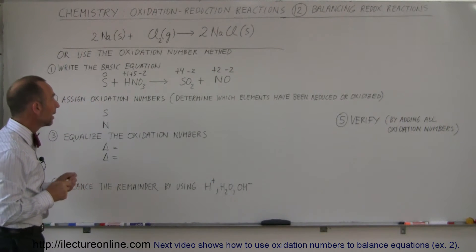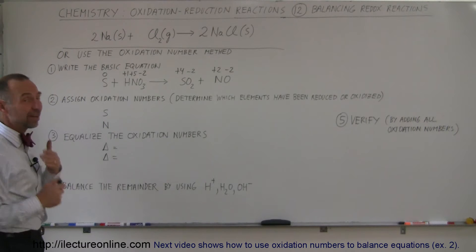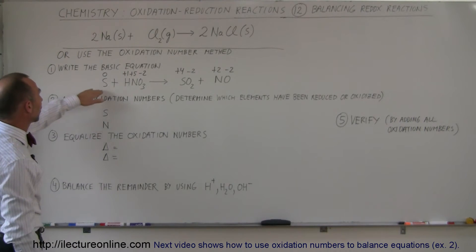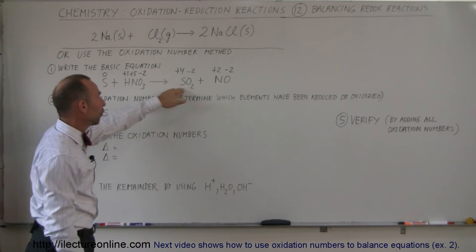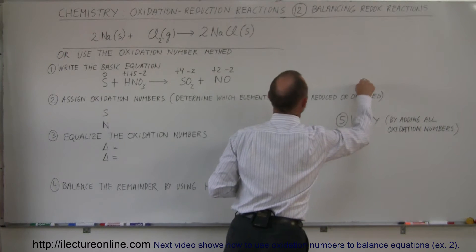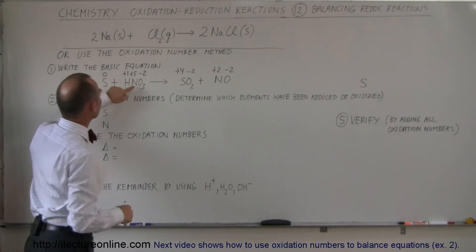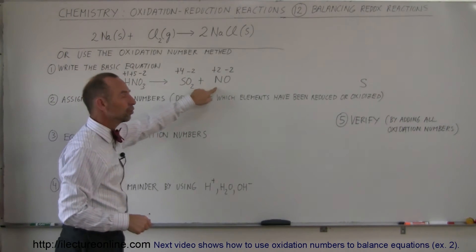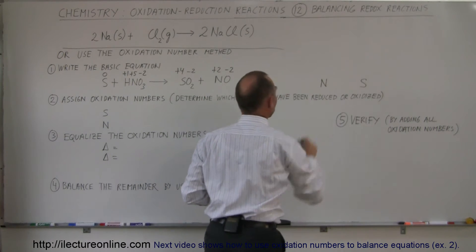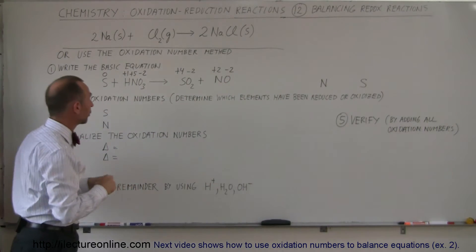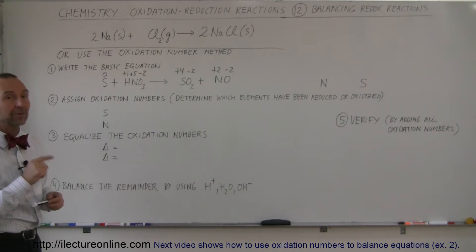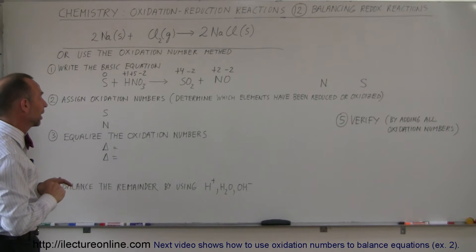Based on the oxidation numbers, which elements have been oxidized and which have been reduced? Sulfur goes from zero to plus four, so sulfur is oxidized. Nitrogen goes from plus five to plus two, so nitrogen has been reduced. Step one — writing the basic equation — is done. Step two — determining all oxidation numbers and which element was reduced and which was oxidized — is done.